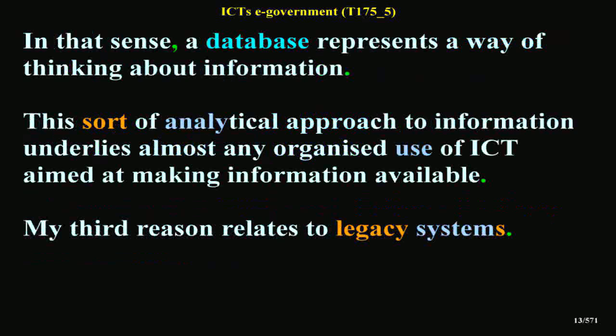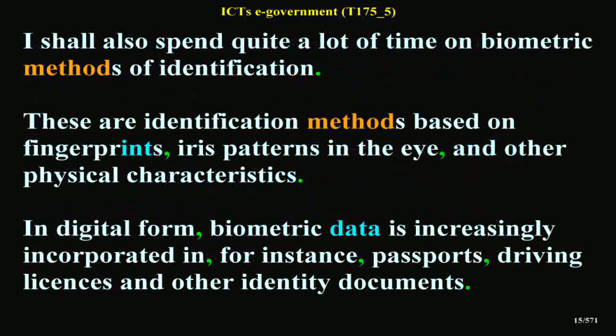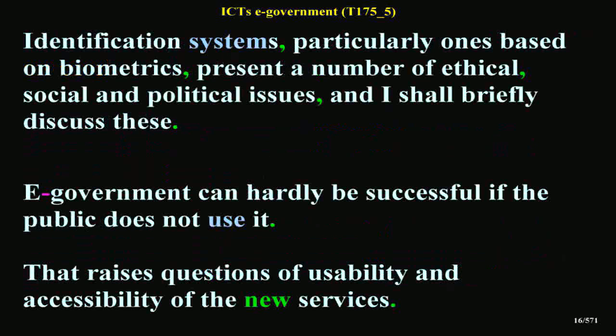My third reason relates to legacy systems. These are already installed systems, sometimes quite old, that are not designed to work together in the way their modern replacements would. In this context I shall look briefly at XML, which is a coding system widely used in E-Government and elsewhere as part of the solution to legacy problems. I shall also spend quite a lot of time on biometric methods of identification. These are identification methods based on fingerprints, iris patterns in the eye, and other physical characteristics. In digital form, biometric data is increasingly incorporated in passports, driving licenses and other identity documents. Identification systems, particularly ones based on biometrics, present a number of ethical, social and political issues, and I shall briefly discuss these.